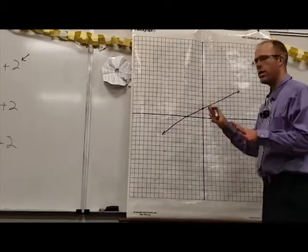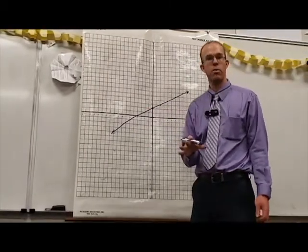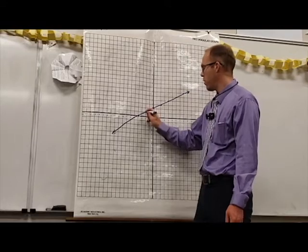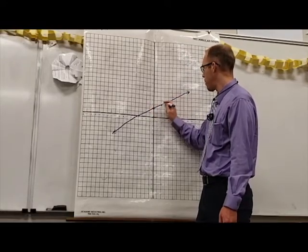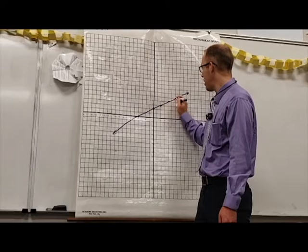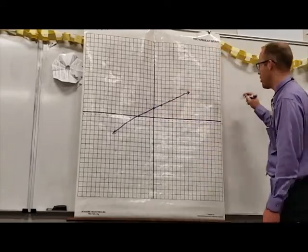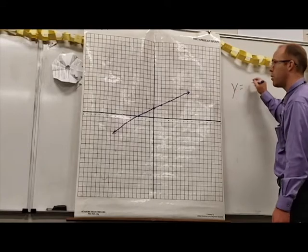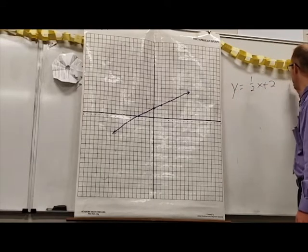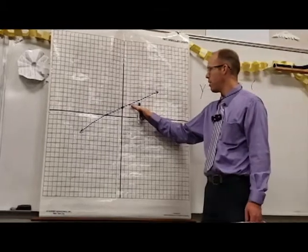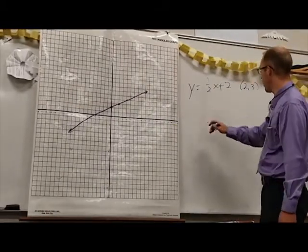Now, what is a line? A line is simply a picture of all of the possible solutions to an equation. So anywhere along this line — if I pick this point, this point, this point — it will work for those equations. We have y equals one-half x plus two, and I'm going to pick the point two, three and test it out.